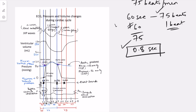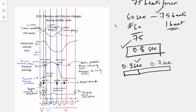Initially, atrial contraction lasts for 0.1 seconds. Then in the remaining 0.7 seconds of those 0.8 seconds, the atria relaxes. Now there is overlap between the mechanical actions of the atria and the ventricles. When the atria is contracting — that is for 0.1 seconds — the ventricles are relaxing, which is the diastole, the ventricular diastole.